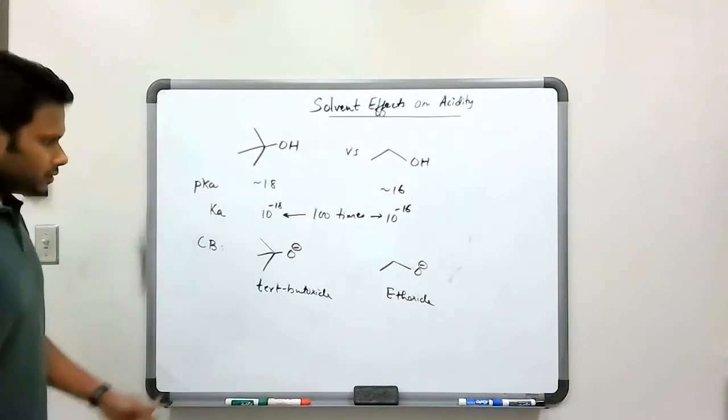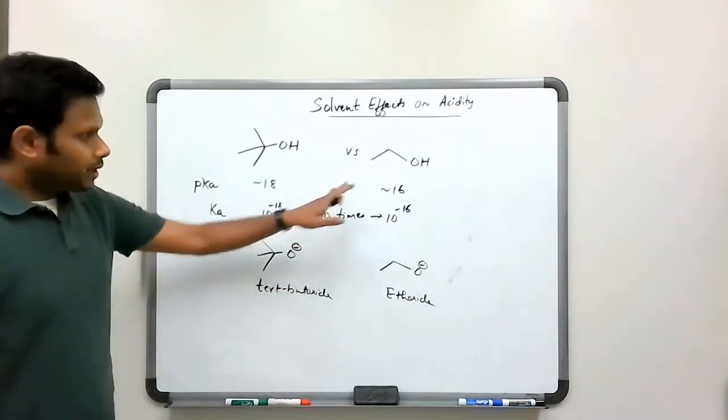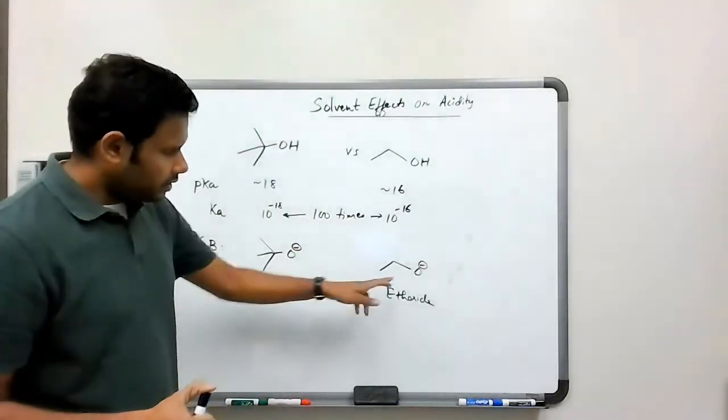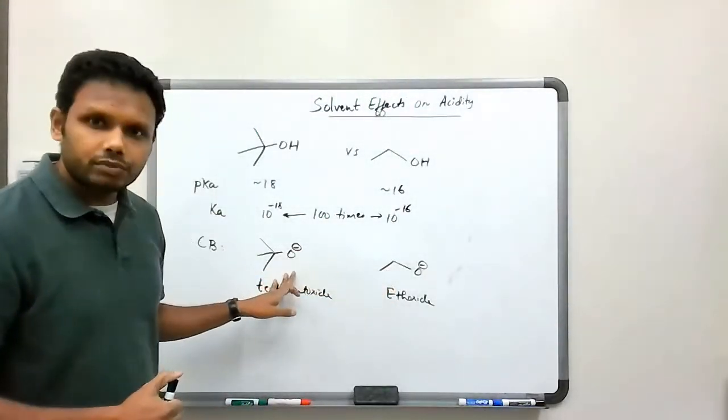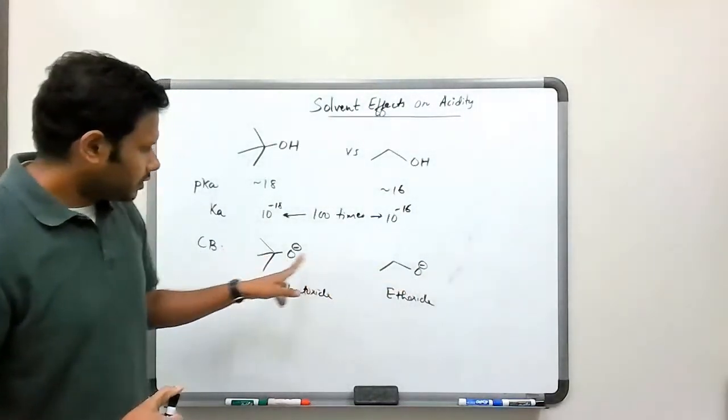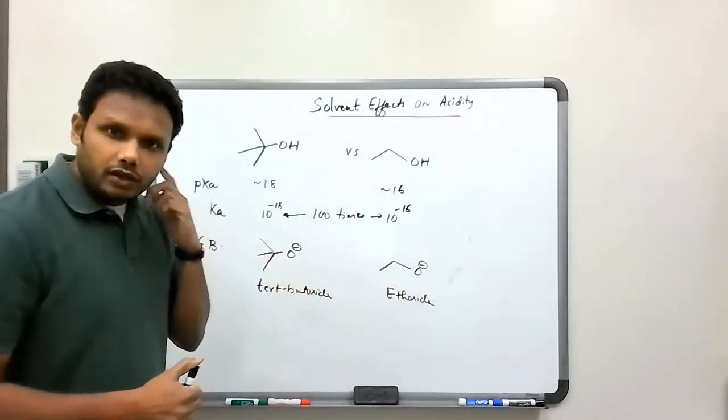Now, so for some reason, based on these pKa numbers, what we know is that the ethoxide is more stable than the tert-butoxide. But if you look at it, they both have the negative charge on the oxygen atom.